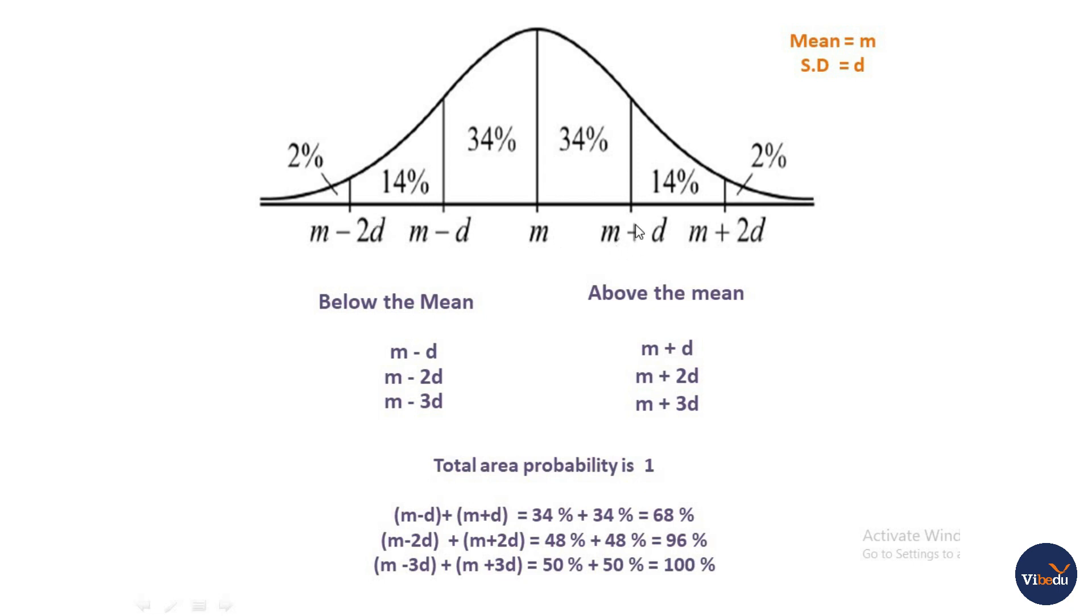Then M-2D to M+2D vary from, so 48 plus 48% is 96%. Then finally, M-3D to M+3D vary from, so 50 plus 50% is 100%. This is the normal distribution.